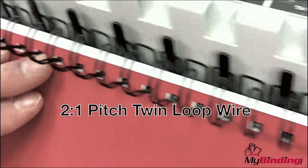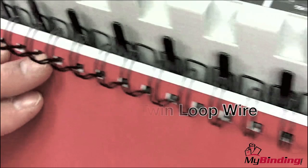Find a book with 2 to 1 pitch twin loop wire. The 2 to 1 just refers to two holes punched for every inch.